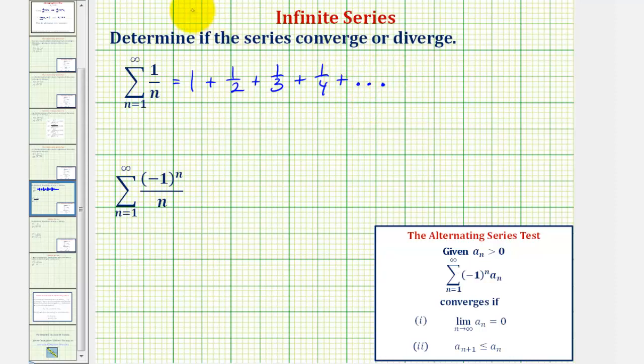We could also use the p-series test. Notice how here, p would equal one, and therefore, the infinite series diverges by the p-series test. So we'll say the series diverges by the p-series test with p equals one, which is less than or equal to positive one.